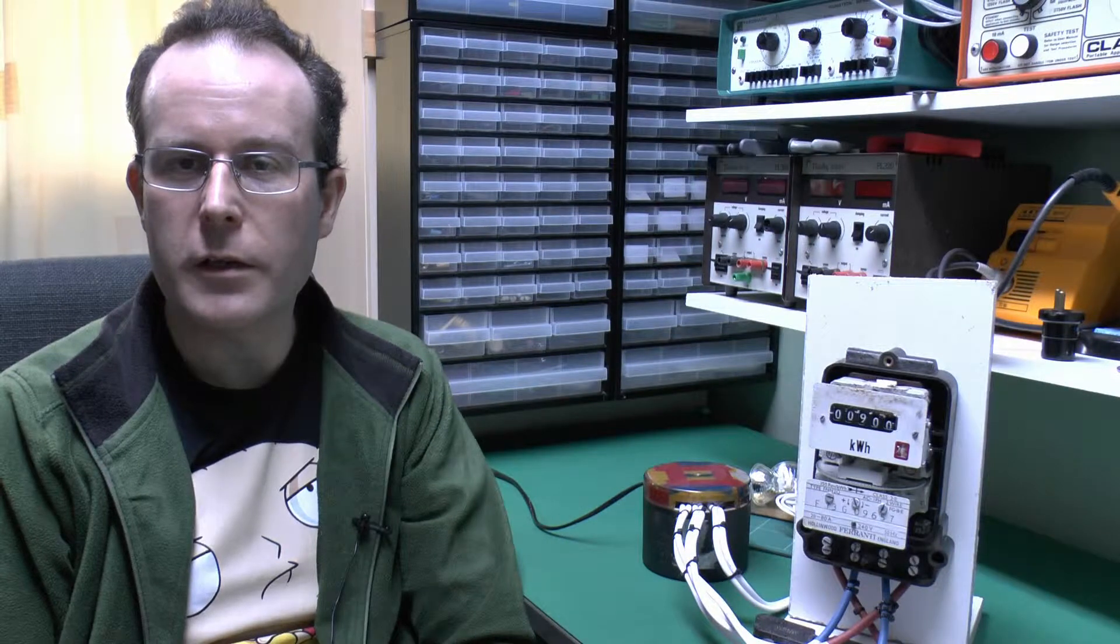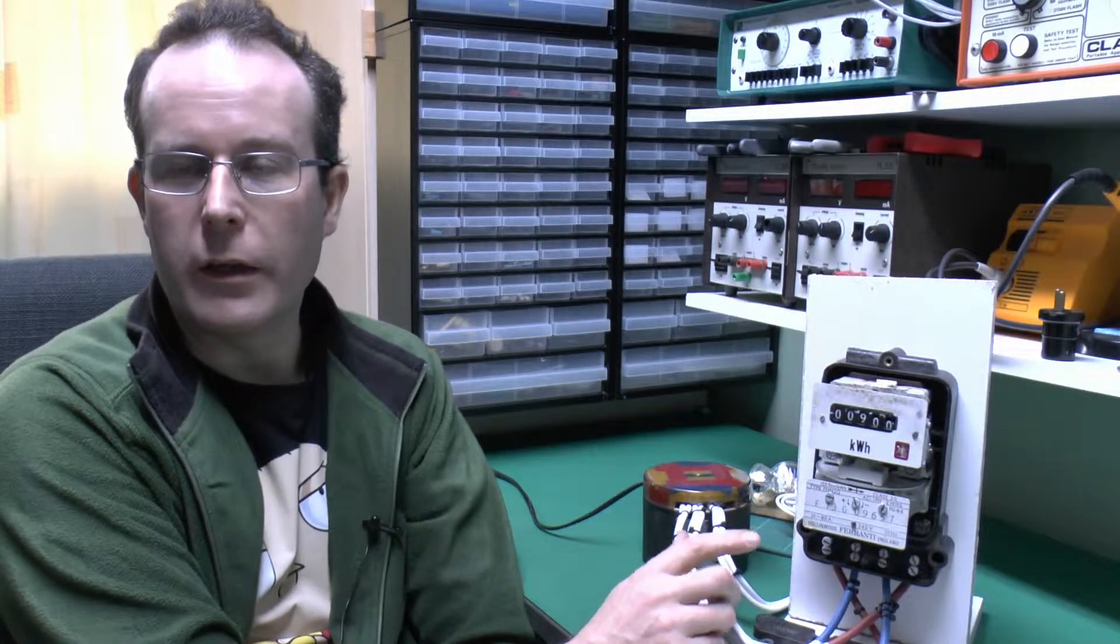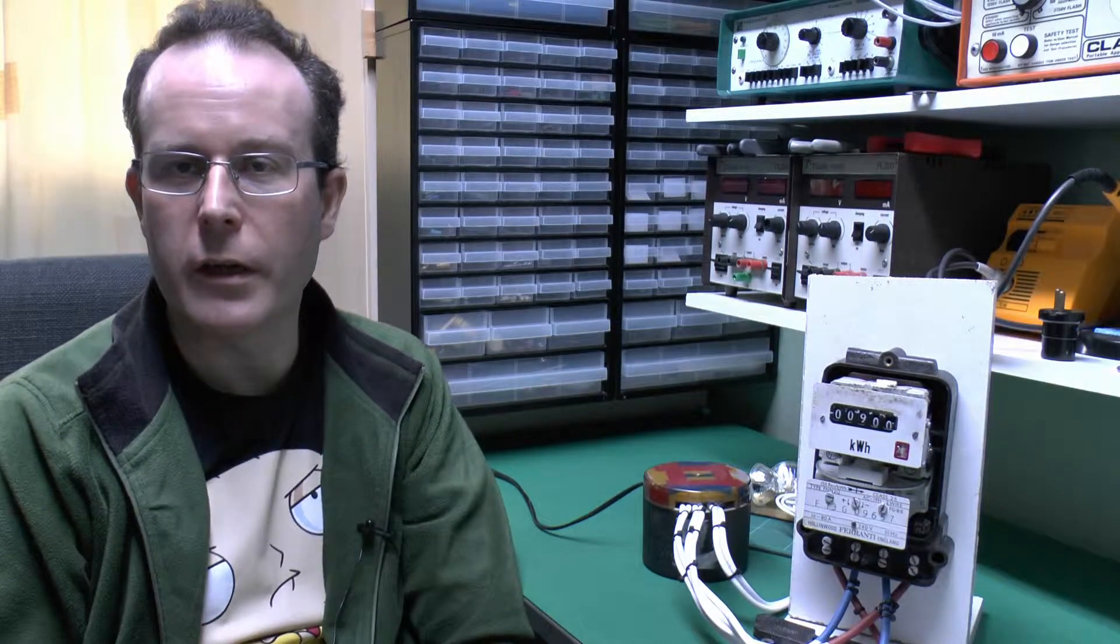Hello, this is JW and this is part 3 of the Ferranti meters. This one we're going to have a look at the meter here which is the FNN2Q and it's that one that had all that rust inside and the seized up rusted screws on the outside.